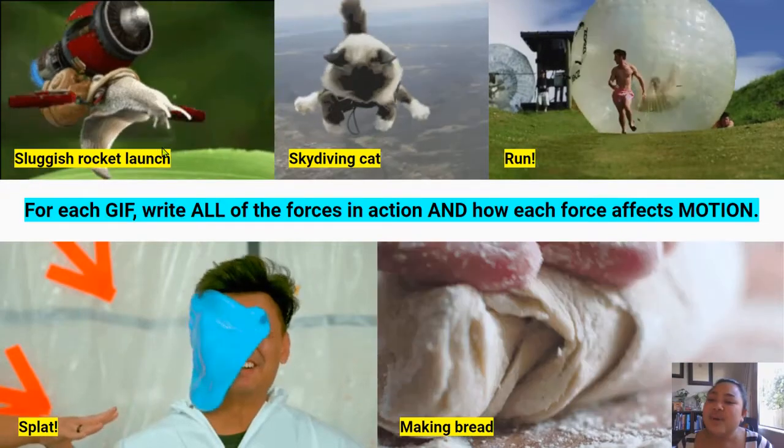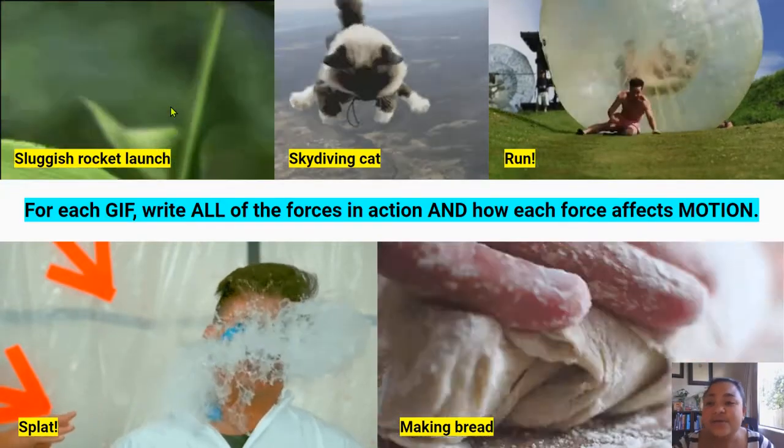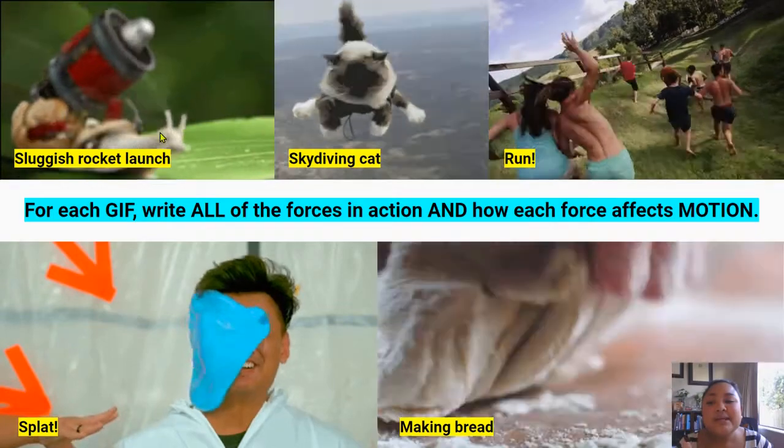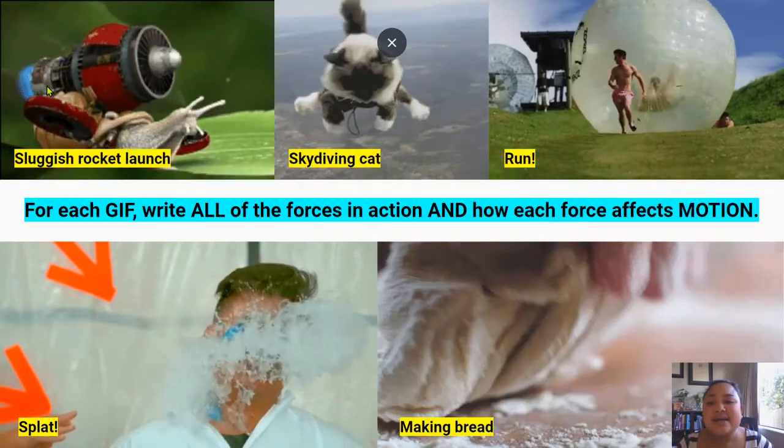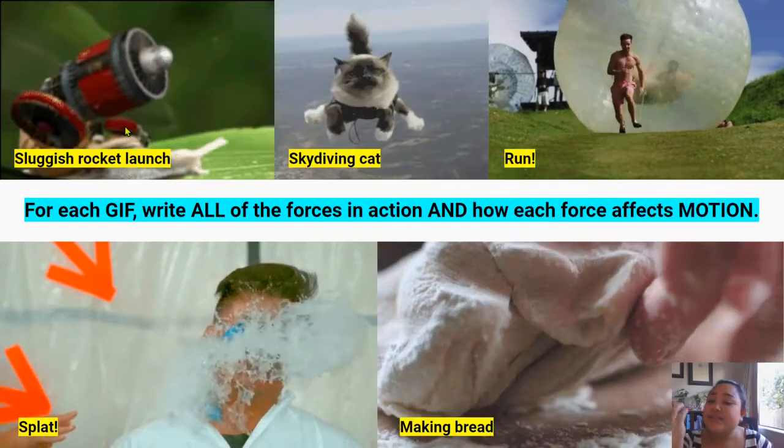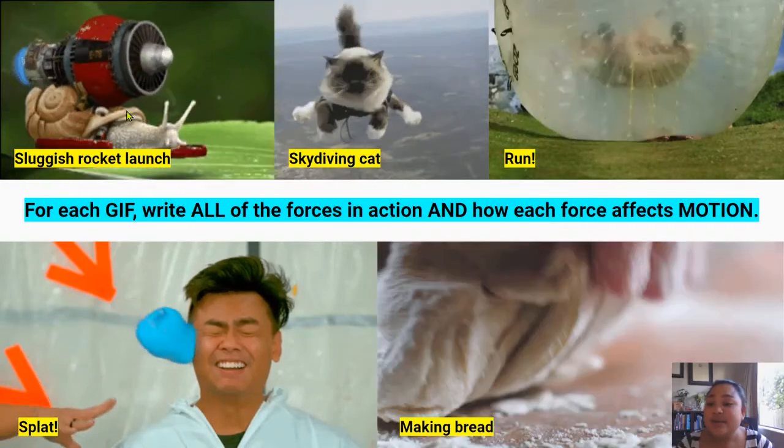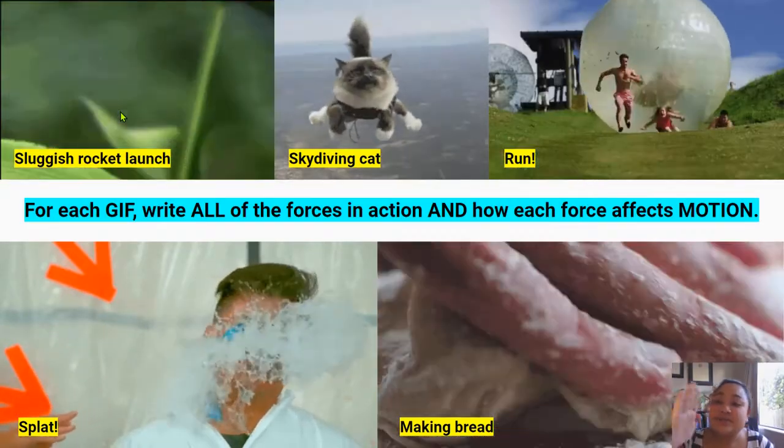What else? Well, it looks like it's on Earth, so gravity is probably acting on our slug here in the rocket. Gravity is pulling the slug and the rocket down and so it's pulling the direction of travel downwards.